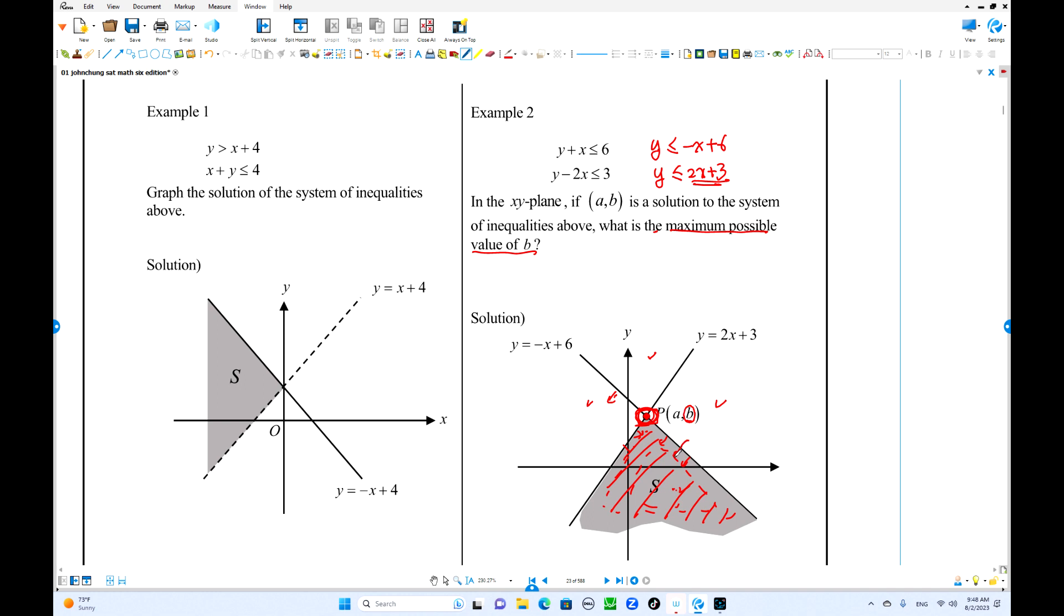Once you find the solution set, just find out intersection. How can you find intersections? Solve these two equations to find intersection. Negative x plus 6 equals 2x plus 3. So 3x equals 3, x equals to 1. If x equals 1, what is y? Put this number in. If x equals 1, y is 5. 2 times 1 plus 3 equals 5, y equals 5.